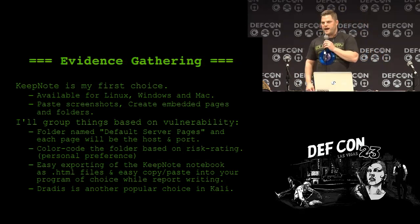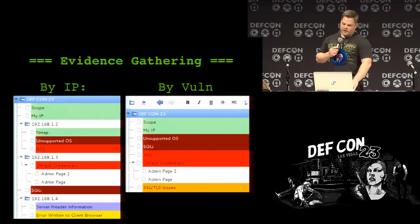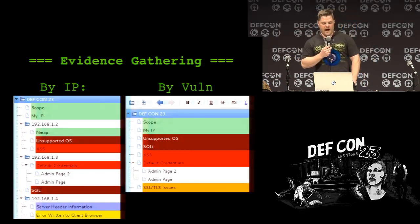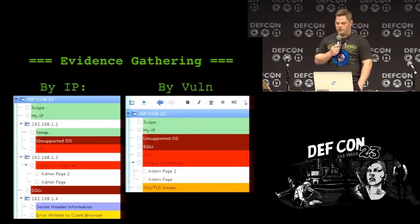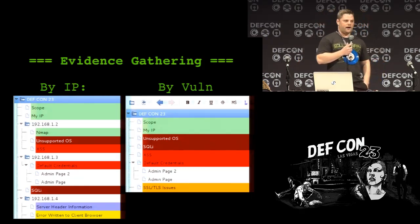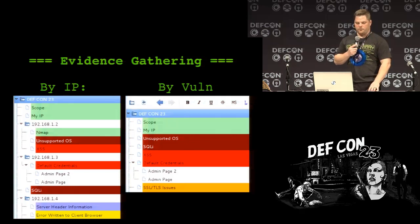One of the reasons I like KeepNote is that you can easily create scripts, do scripting for it, and it's very expandable. You can easily export it as HTML files to give to a client or to share with team members. To show how I might group things: one side is organized by IP — if I have several IPs or applications I'm looking at, I break it out into a folder for each. Or if it's a smaller scope, I do it by vulnerability. I color code them — the darker ones are obviously your higher risk — and green is a visual reference for scope or anything else I need to reference quickly.